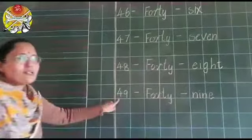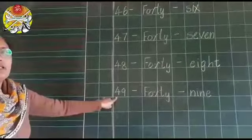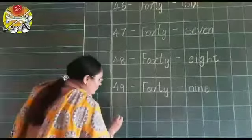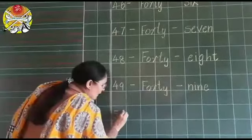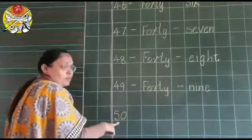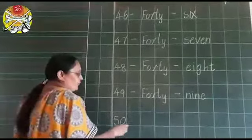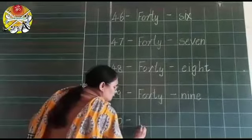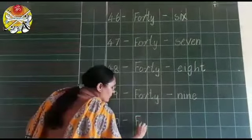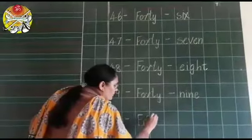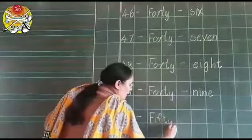Now, children, what comes after 49? 50. So, we will leave one box and write this number name, 50. 50 dash F-I-F-T-Y, 50.